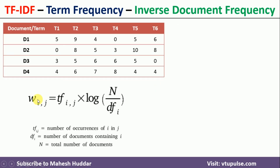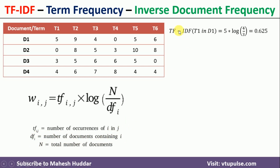Once the term frequency matrix is created, we use the equation: W_ij = TF_ij multiplied by log(N / DF_i), where TF_ij is the term frequency of the i-th word in the j-th document, DF_i is the number of documents containing the i-th word, and N is the total number of documents.